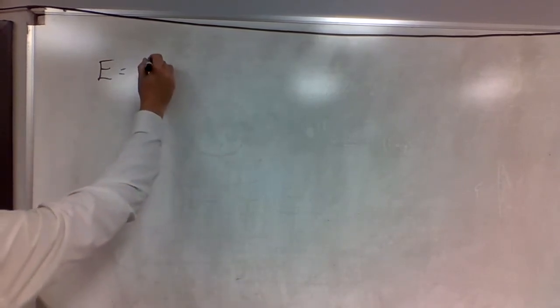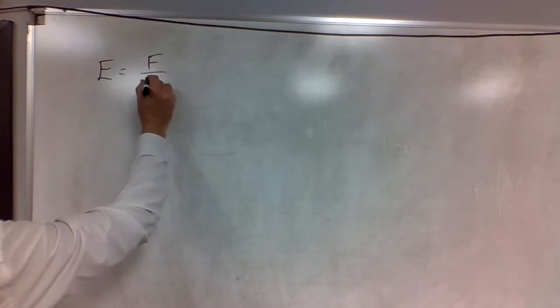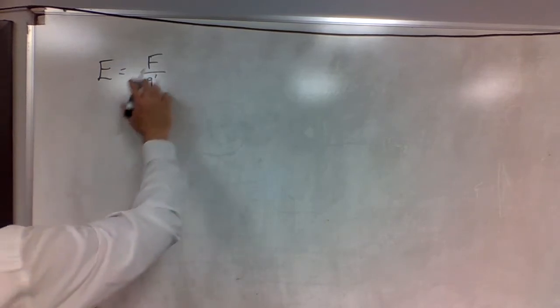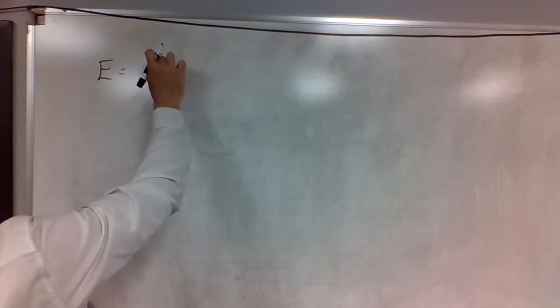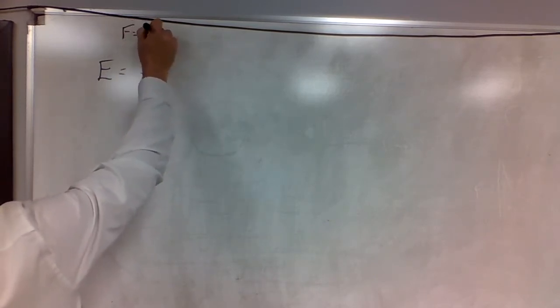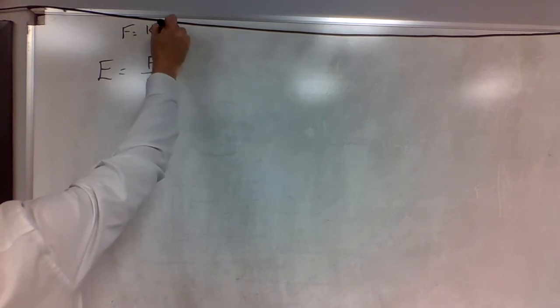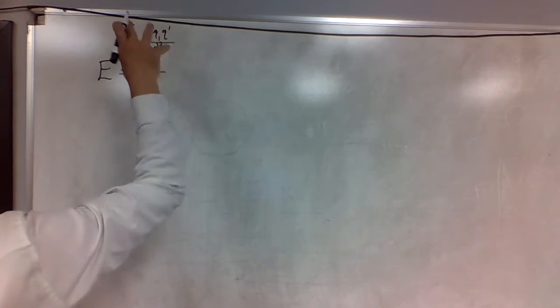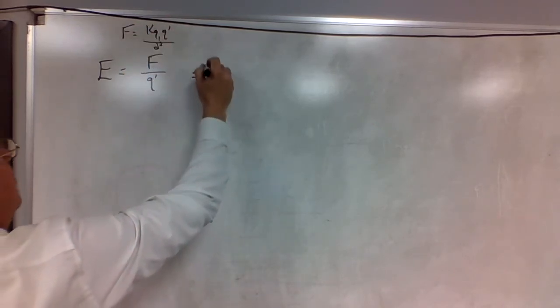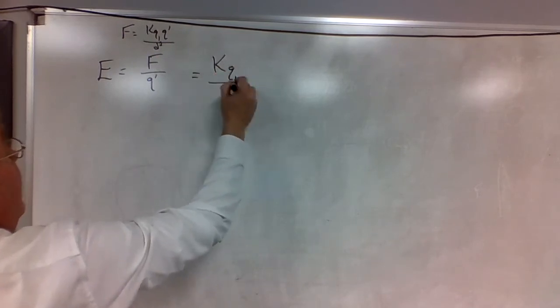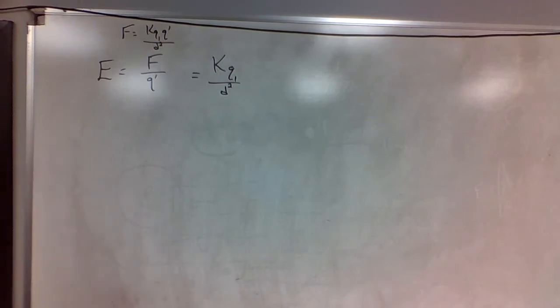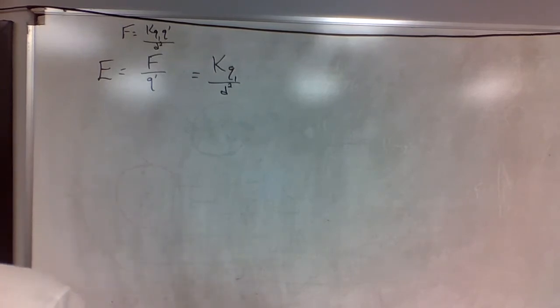We know the electric field E is defined as the force on a test charge divided by the charge on a test charge. When we substitute Coulomb's law for F — since F = k·q1·q' / d² — the q-primes cancel, giving us E = k·q1 / d².